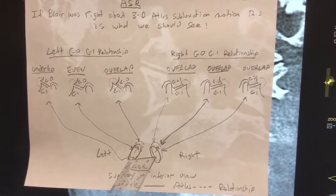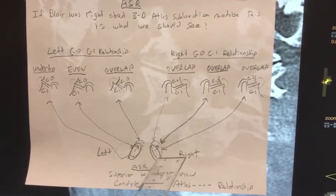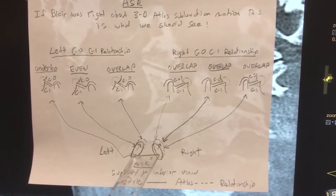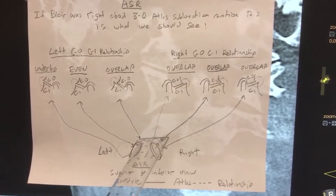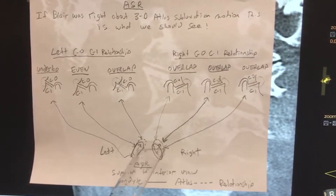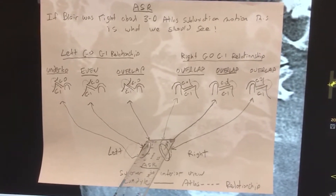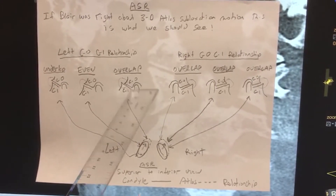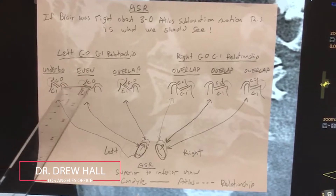So if we have an ASR, we have a track condyle on the left and we have an overlap on the right. On the left posterior side of the track condyle, because the atlas has moved forward, we should see an underlap. In the middle we should see even, and on the front of the track condyle — too far around the bend — we should see overlap, even, underlap.